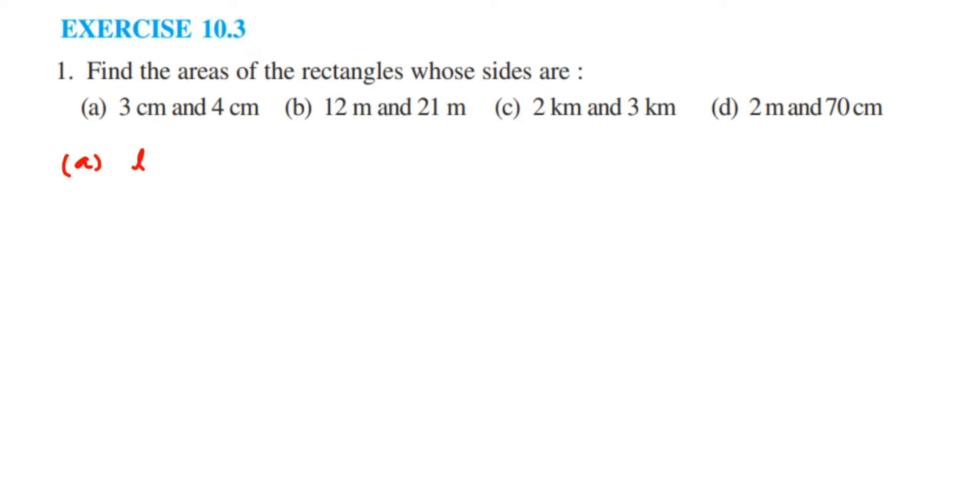Now let us take length as 3 cm and breath as 4 cm. Now area of rectangle is length into breath. So area is equal to length into breath. So this will be equal to 3 multiplied by 4 which is equal to 12. And the units will be centimeter square. Because you are multiplying centimeter and centimeter, it will become centimeter square.